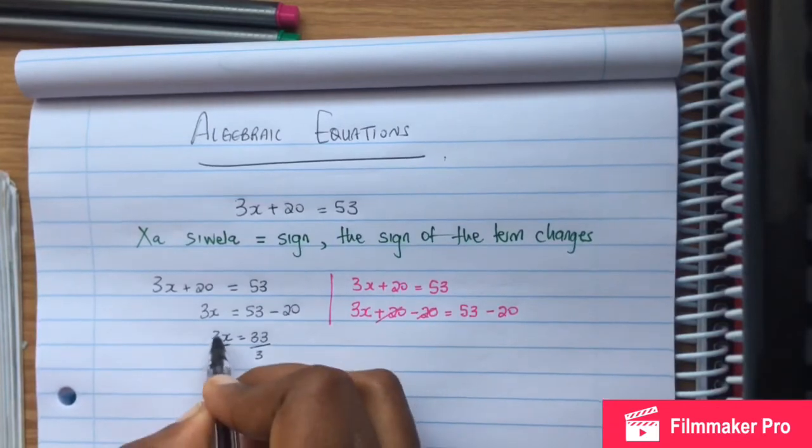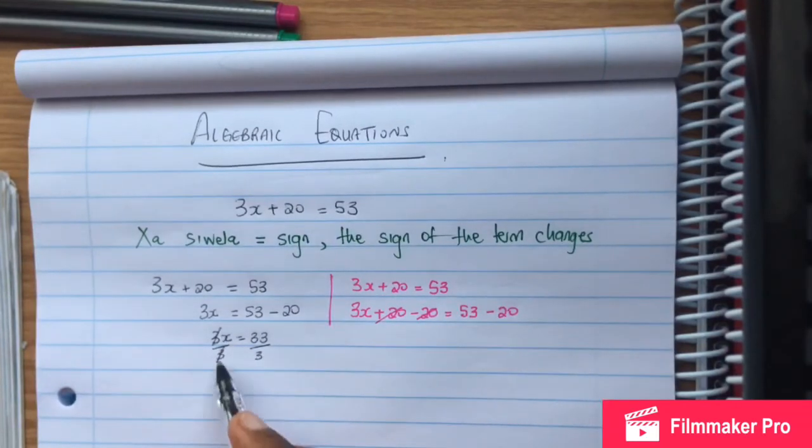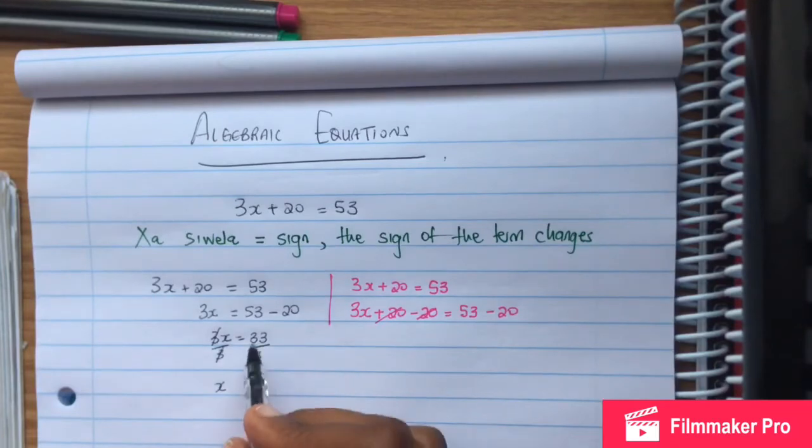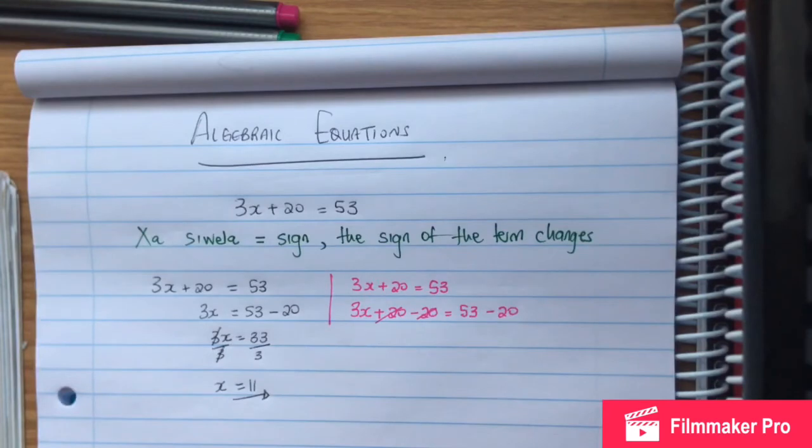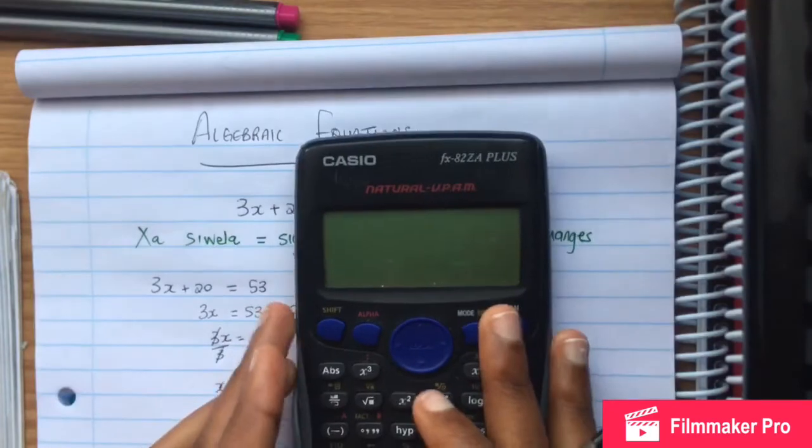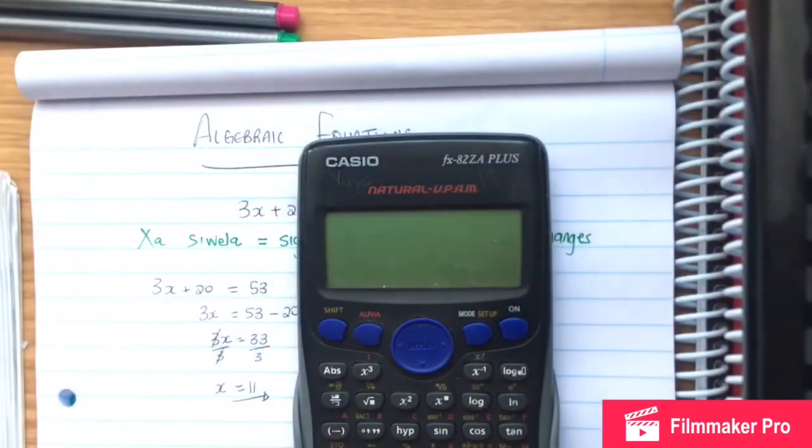Divided by 3 on both sides. Then x equals, and 33 divided by 3 is 11. Now we need to check if our answer is right by substituting back.